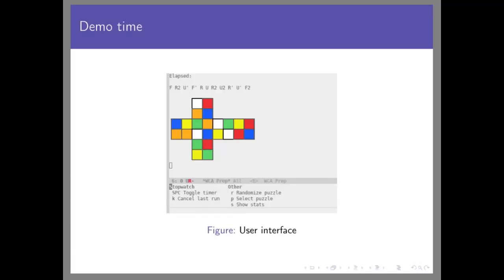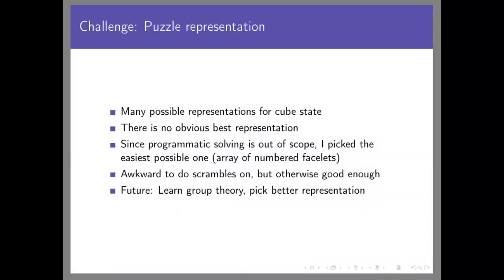Building this thing had several challenges. The first was how to represent the state of a Rubik's cube — there are many possible representations and no obvious best solution. Since I didn't need to programmatically solve the cube, I picked the easiest possible representation: an array of every single facelet. For a three-by-three cube you have nine facelets per side times six sides, giving 54 elements. It's simple but a bit awkward for scrambles. In the future I plan to learn some group theory and pick a better representation.